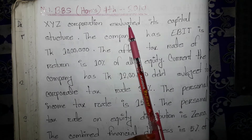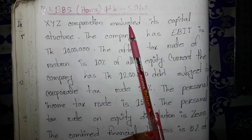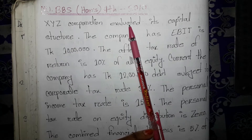The third chapter is theories of capital structure. This chapter covers the fourth question, which is from the National University Honours fourth year syllabus.